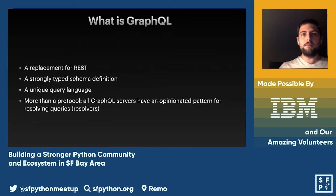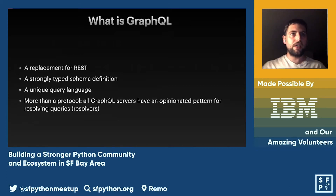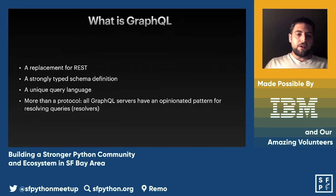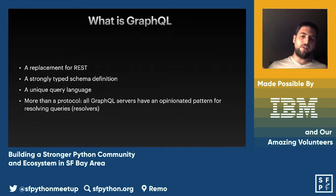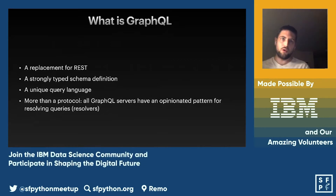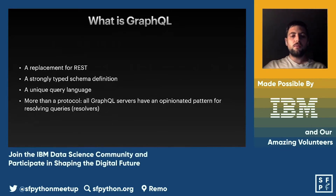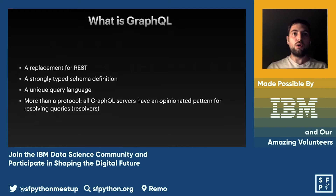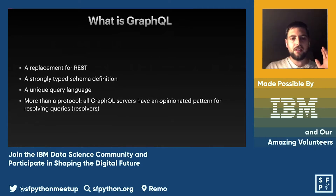With REST you have to know what endpoints to hit, what parameters to input, and what type of data comes out. GraphQL's query language is very expressive, allowing clients to request lots of data with one single query instead of many different queries. GraphQL is also more than just a protocol — all GraphQL servers have an opinionated pattern on how to resolve incoming queries, called resolvers.